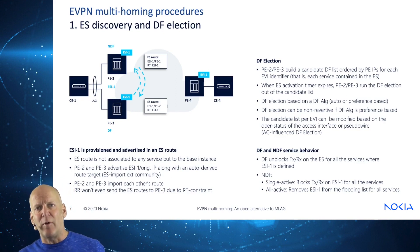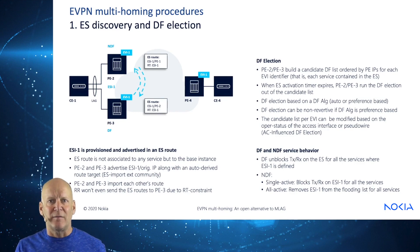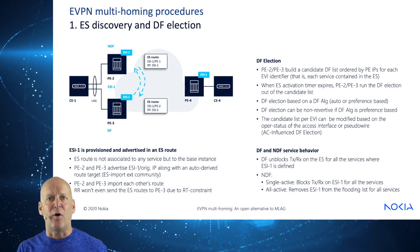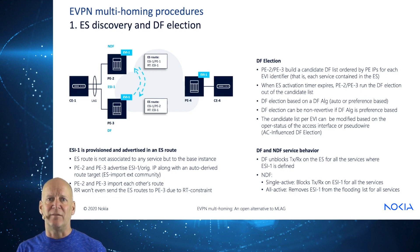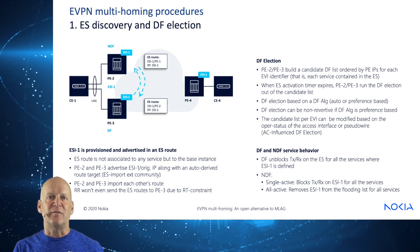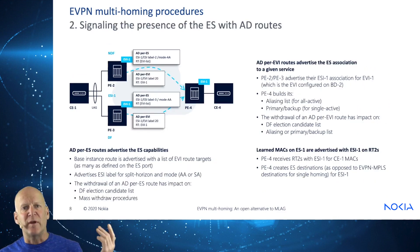What happens during normal operation? The DF unblocks transmit and receive on the ES for all services where ESI-1 is defined. The NDF, in single active, blocks transmit and receive on the ESI for all services. In all active, it removes ESI-1 from the flooding list for all services.